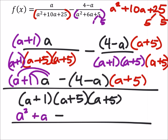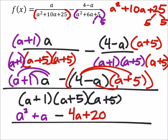If I distribute an a here, I've got an a squared plus a. And then I'm going to subtract this. I'm going to keep these in parentheses and then I'll change the signs afterwards. So I've got 4a plus 20 minus a squared minus 5a.